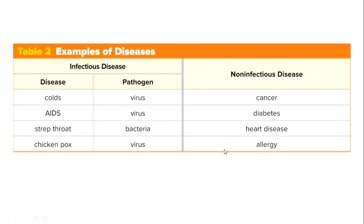Non-infectious diseases, on the other hand, are caused by environmental or genetic disorders — not a pathogen. Skin cancer, diabetes, and allergies are examples of non-infectious diseases. Non-infectious diseases are not contagious and cannot be spread from person to person.